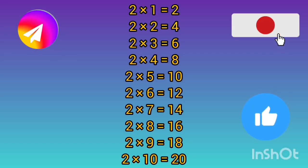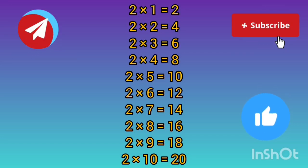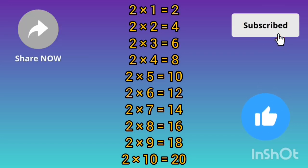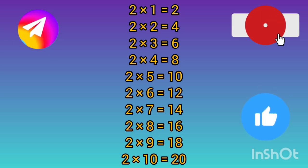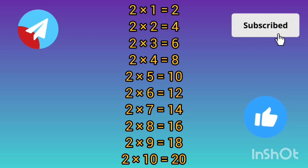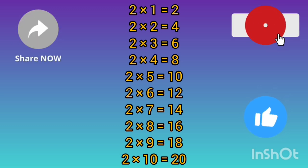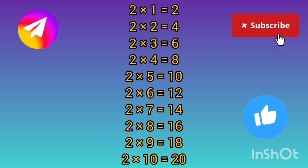Two ones are two, two twos are four, two threes are six, two fours are eight, two fives are ten.